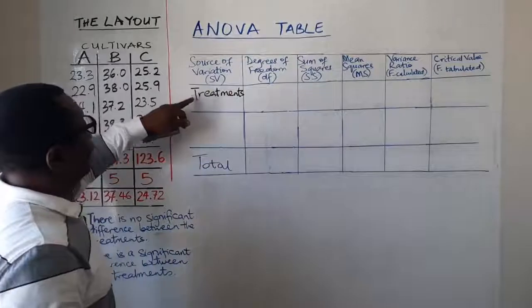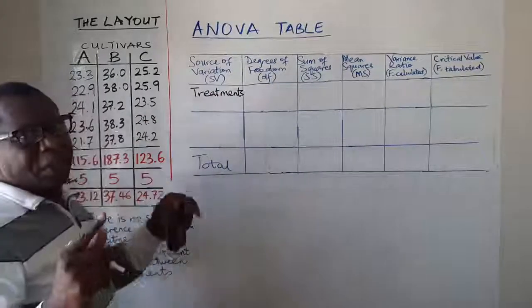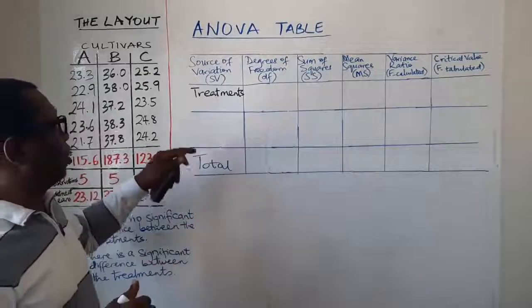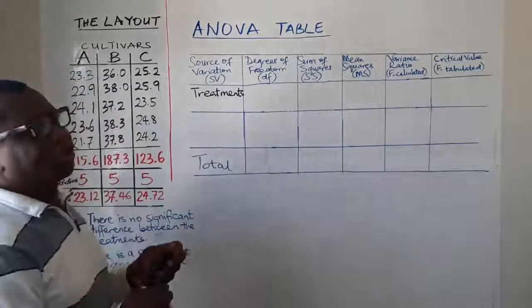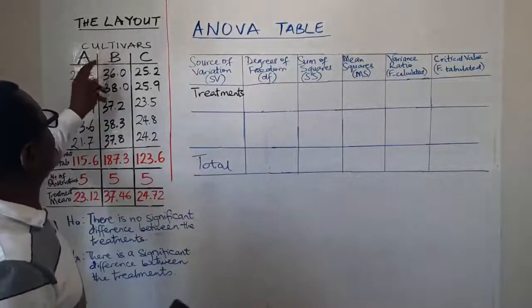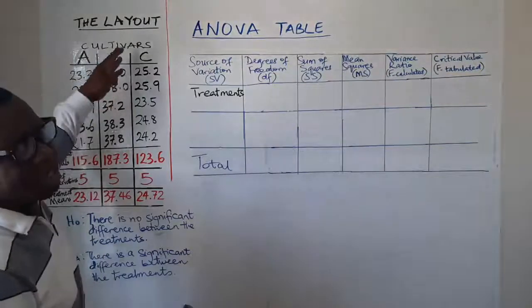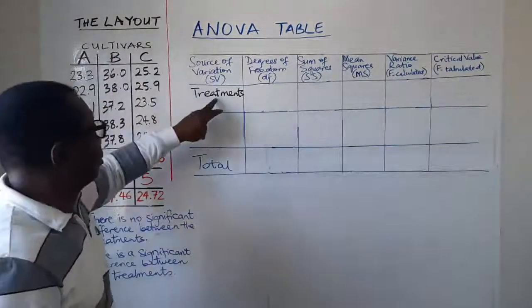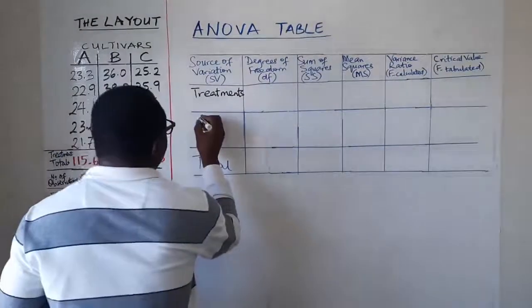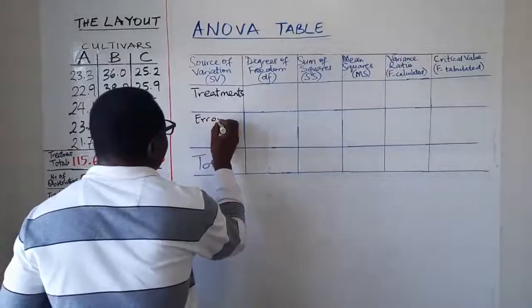on that source of variation is treatments. Because in completely randomized design, as I explained in previous video, we have only one source of variation, and from the data we have, the only source of variation is variation due to the treatments. So you have treatments there and the next thing you have of course is the experimental error.